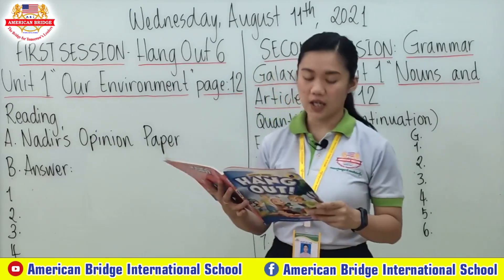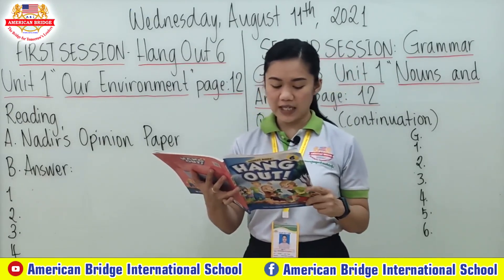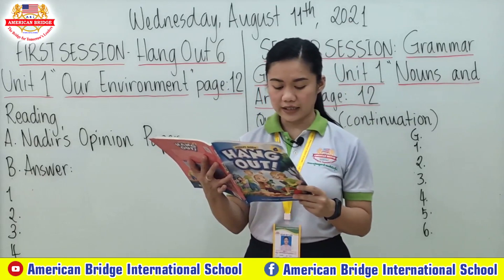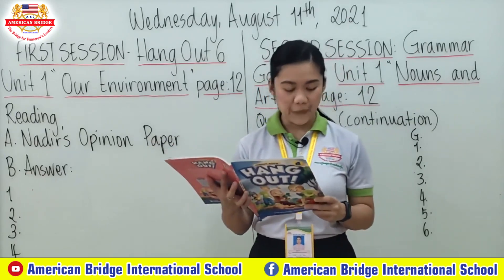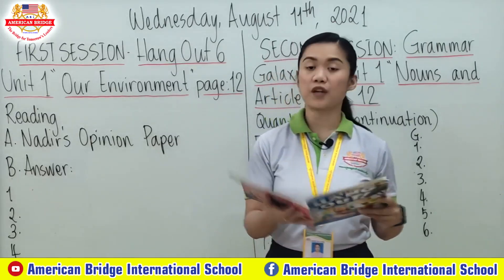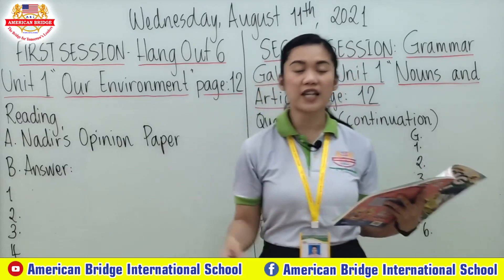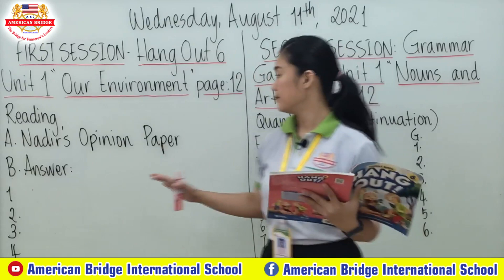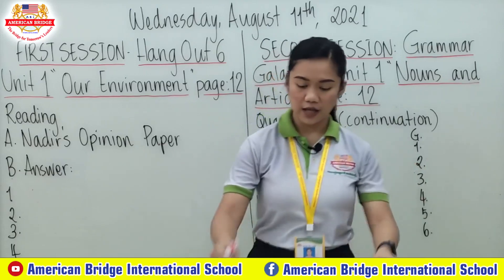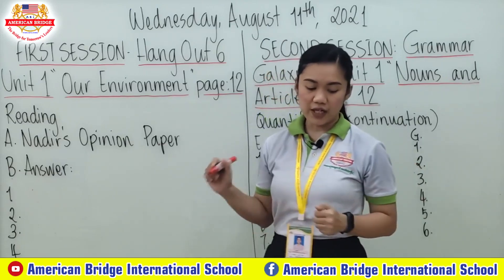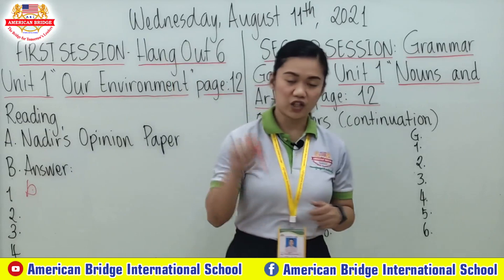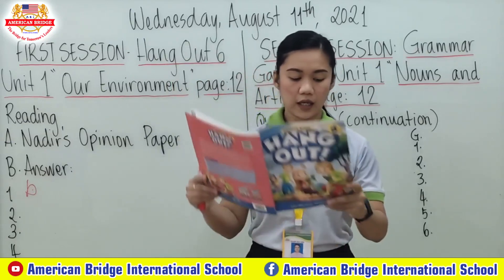The first question is: What is the main idea of Nadir's paper? A. Green areas need a lot of space. B. Green areas are important. C. Green areas are beautiful and peaceful. So, what do you think is the correct answer, everyone? It's letter B. Correct. Green areas are important — you can check that box.